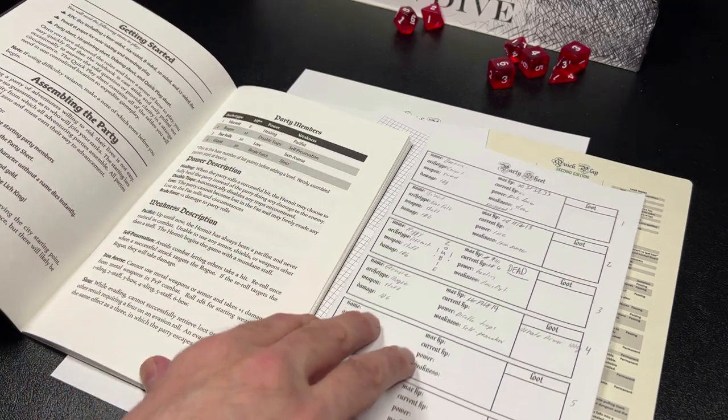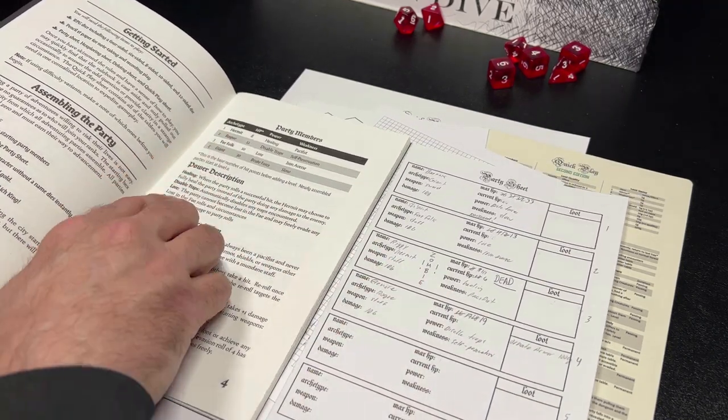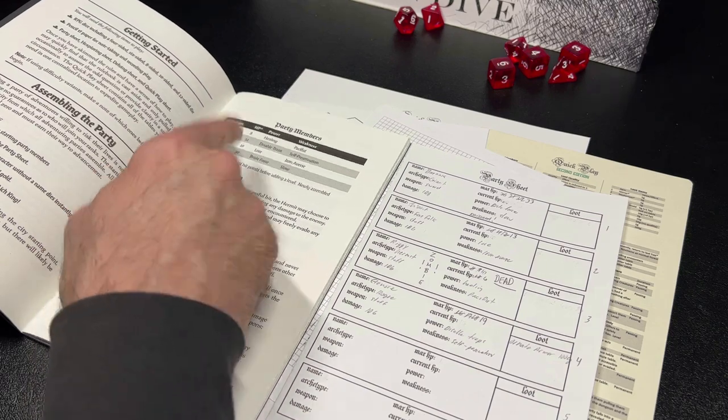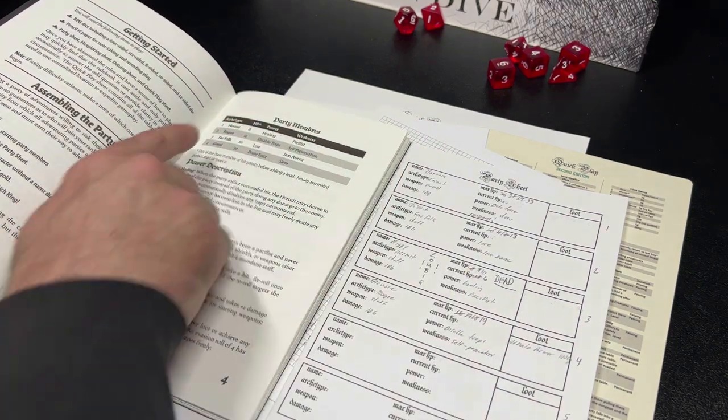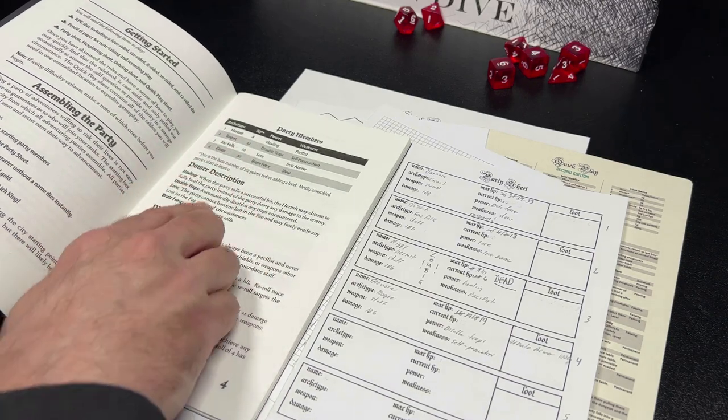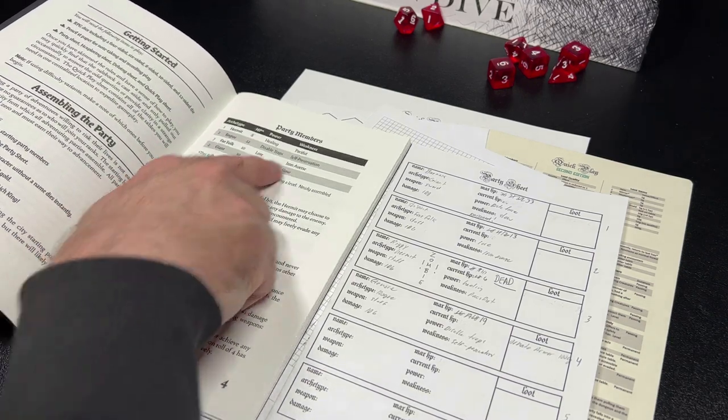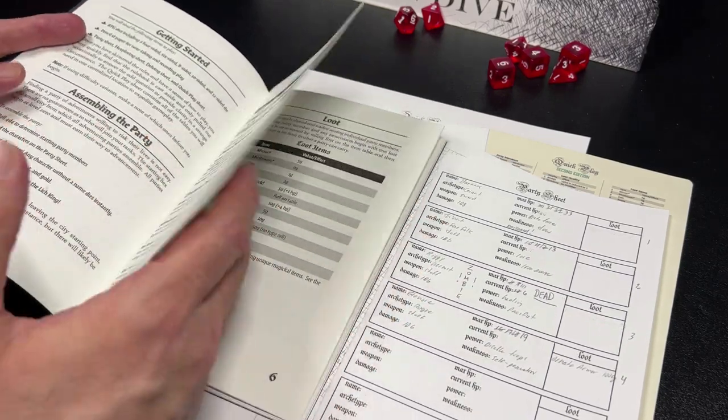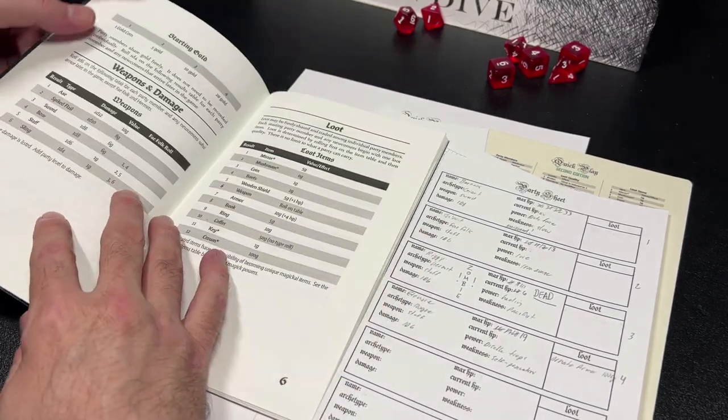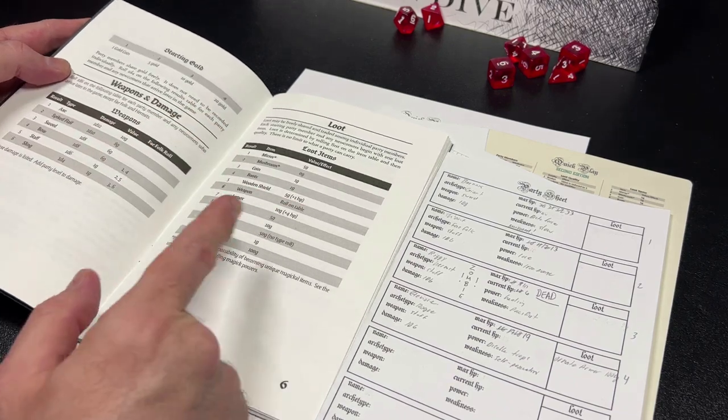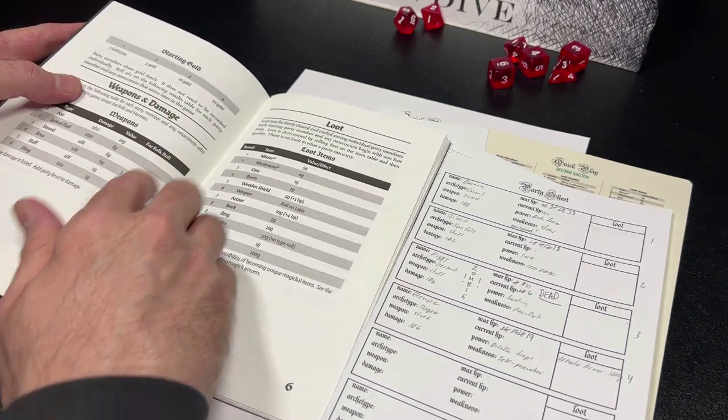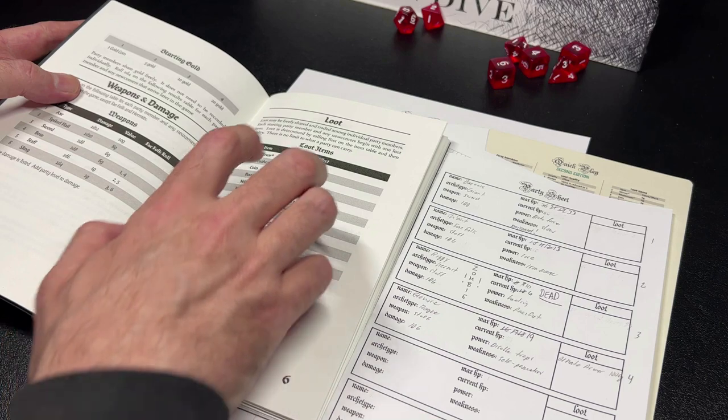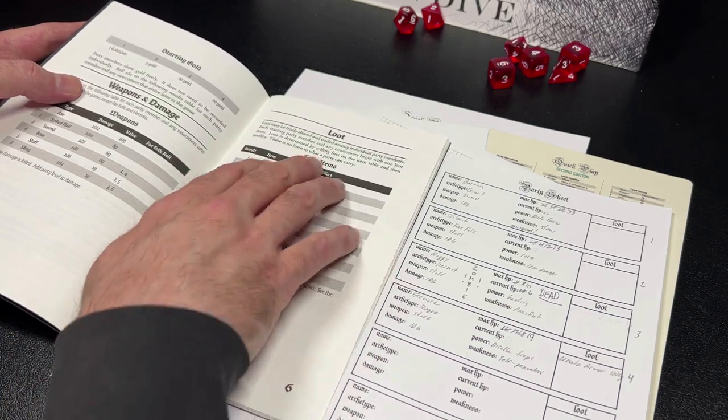At the beginning of the game, you will roll for your random party. You will roll a d4 four times and you might have a hermit, a rogue, a fey folk, or a giant. Each one of those archetypes has a certain number of hit points, a certain power, and a certain weakness. Once you determine the four archetypes in your starting party, you will name them and then you will roll for their starting gold, their starting weapon, and each new member of your party starts with a piece of loot.